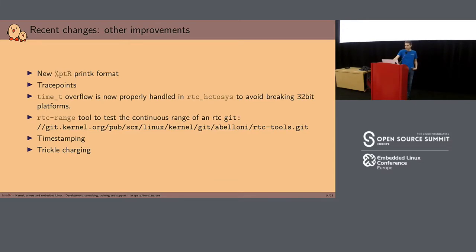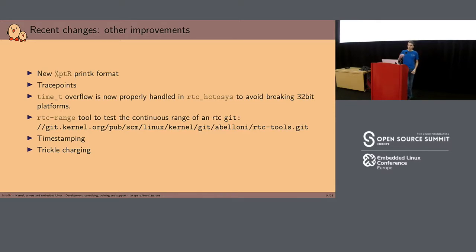We now have support for timestamping. We also have support for trickle charging, which wasn't straightforward at first. Trickle charging is when you have a rechargeable battery and send a really small current to keep the battery topped up. You have to configure it depending on your battery's physical attributes — you don't want to overcharge it, and you probably don't want to undercharge it either, else you will lose the date and time at some point.